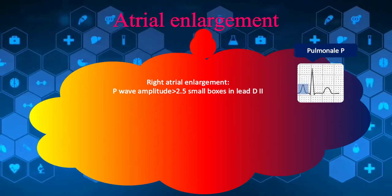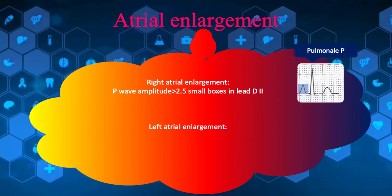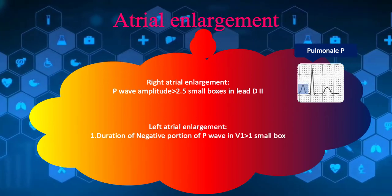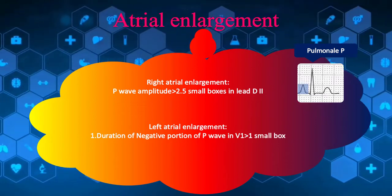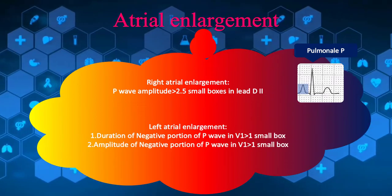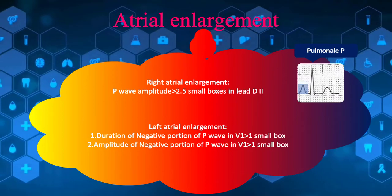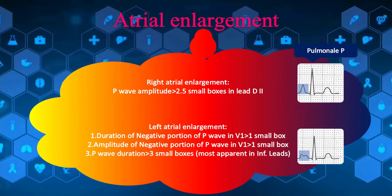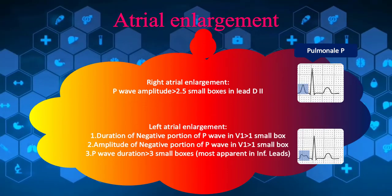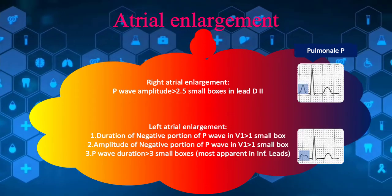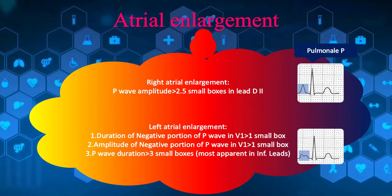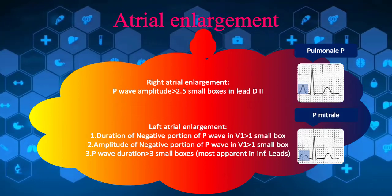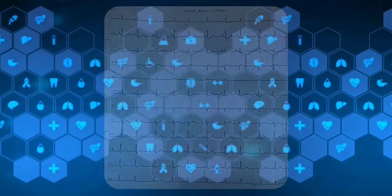The presence of any of the following is in favor of left atrial enlargement: (1) Duration of negative portion of P wave in V1 greater than 1 small square. (2) Amplitude of the negative portion of P wave in V1 more than 1 small square. (3) P wave duration equals 3 small squares, which is usually most apparent in inferior leads. In left atrial enlargement, P waves are usually notched in inferior leads — this is called P mitrale.